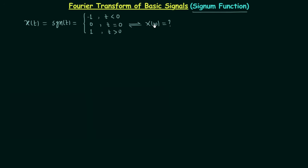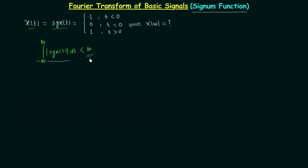To calculate the Fourier transform of the signum function, we will first check whether it is absolutely integrable, because the Fourier transform formula only applies to absolutely integrable signals. The condition for a signal to be absolutely integrable is that the integral from minus infinity to infinity of |x(t)| dt should be less than infinity — that is, the total area under |signum(t)| must be finite.